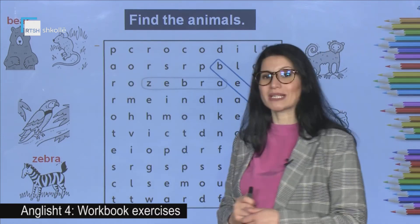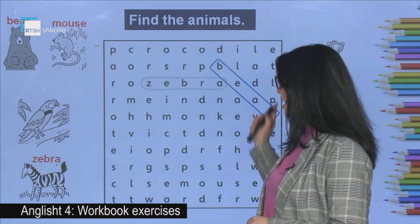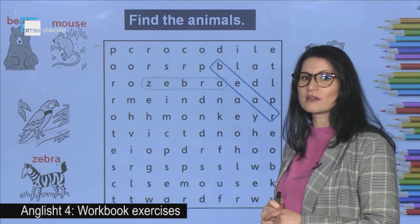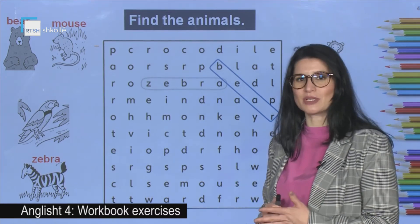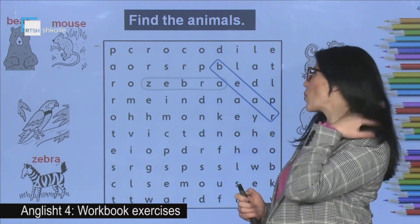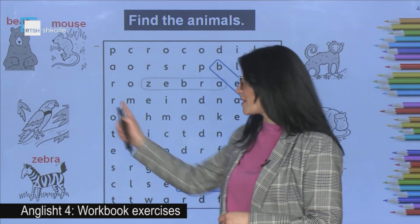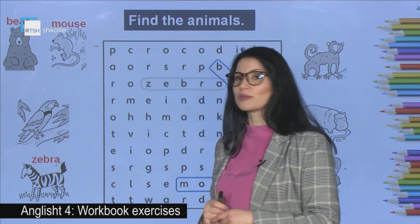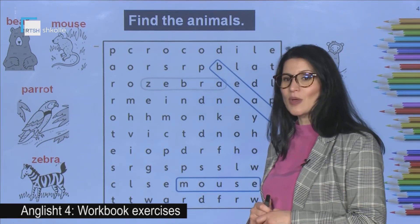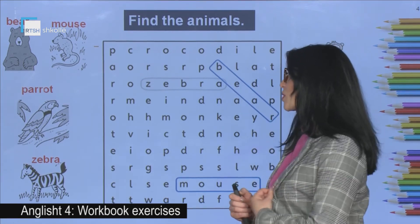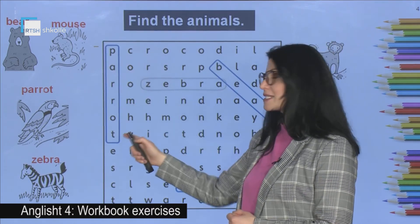Then we have number two. What is it? It's a mouse. And where is the word mouse here? You can check it in your books as well. Mouse is here. Then we have picture number four. What is it? It is a parrot. Where is the word parrot here? It is exactly here.